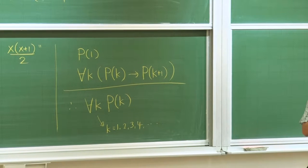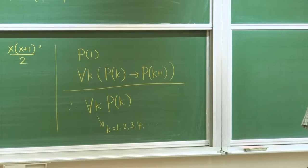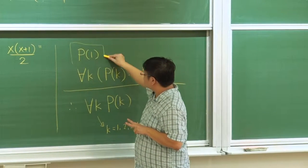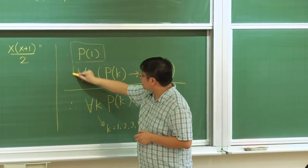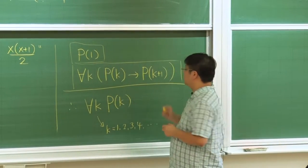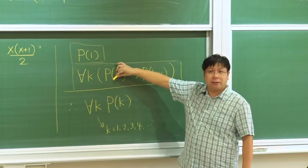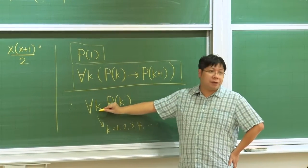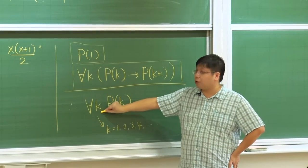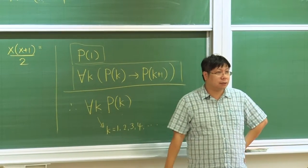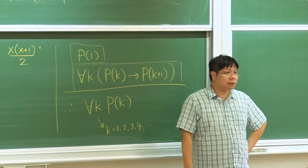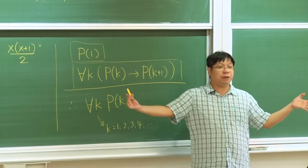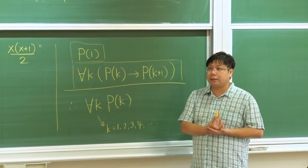This is the form of mathematical induction. We just need to show two things. This is one statement, and this is another statement. Once we prove these two statements, we can show that for infinitely many possible choices of k, P(k) is also correct. This is super powerful — we just need to prove two things, but then we show that infinite cases are all correct.